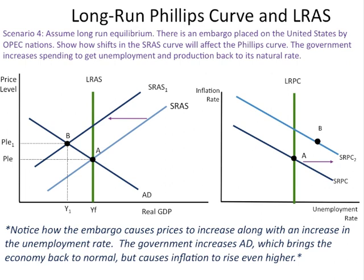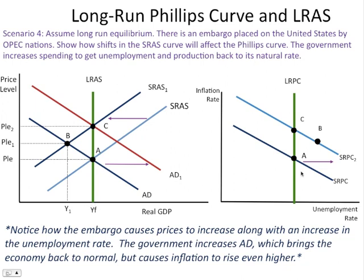To get back to long run, the government increases spending — the G component of aggregate demand — shifting the AD curve to the right back to point C. On the Phillips curve model, we go from A to B, then slide along the curve back to C. AD shifting right causes movement along the curve from B to C, showing prices up and output back to its normal level — unemployment back at the natural rate. This reflects the disequilibrium and the government bringing the economy back to long run, albeit at a higher price level.